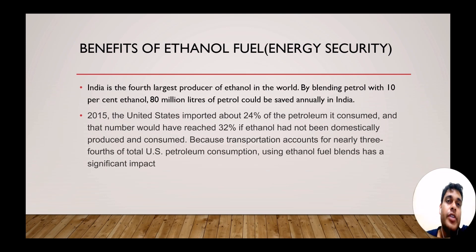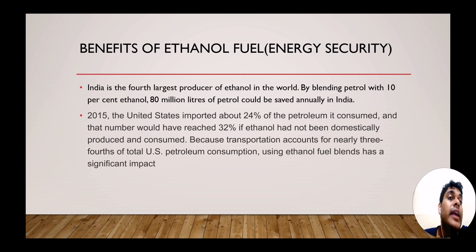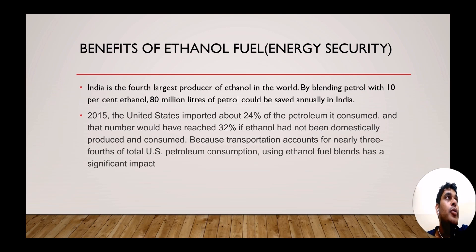Now we will get to know what are the advantages of Ethanol. First is the energy security. India is the fourth largest producer of Ethanol in the world. If we are going to blend our petrol with 10% of Ethanol, then India can save 80 million litres of petrol annually. Obviously, if we are going to save 80 million litres of petrol annually, then we can deploy it for other purposes and our demand for import of petroleum products from foreign countries will be less.